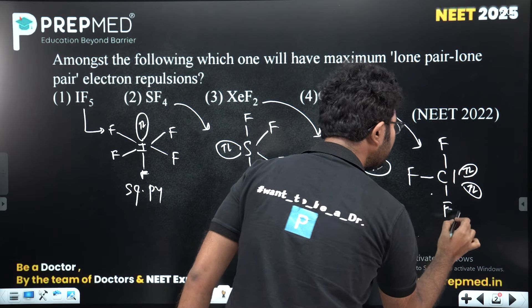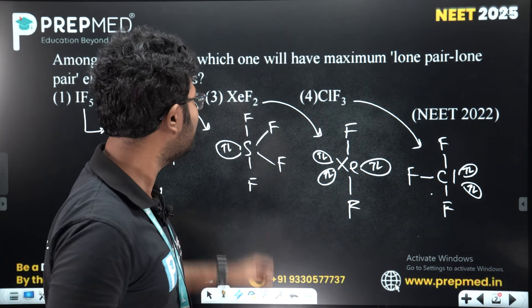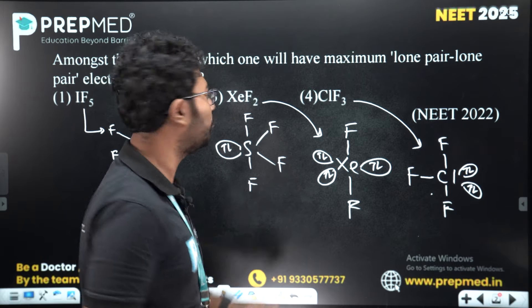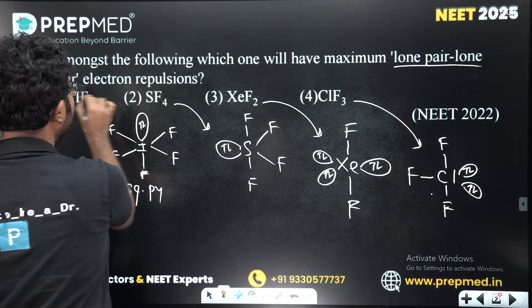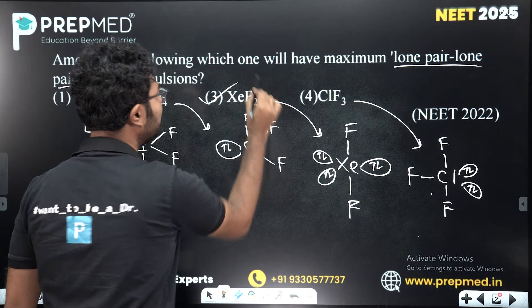The maximum lone pairs are present in number three, that is XeF2. The maximum lone pair-lone pair repulsion is our option three.